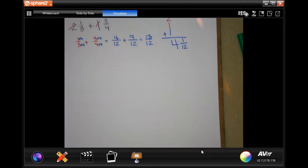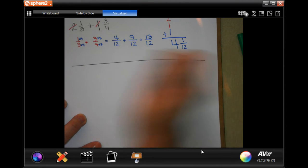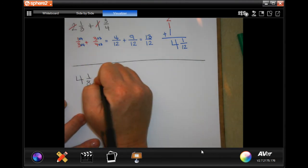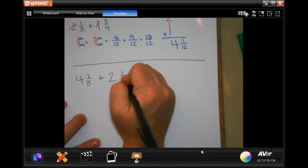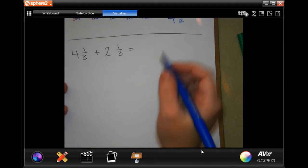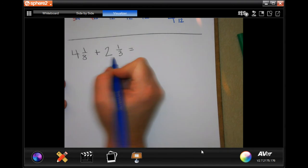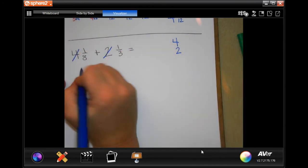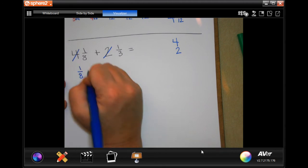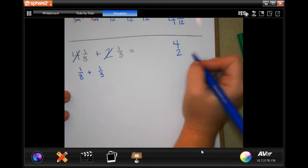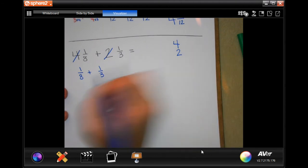We're going to do that one more time. We have 4 and 1/8 plus 2 and 1/3. Now we are going to take our whole numbers and put them over here. Now we have 1/8 plus 1/3. Remember, we're going to go back to our whole numbers. We just need to figure this out first.